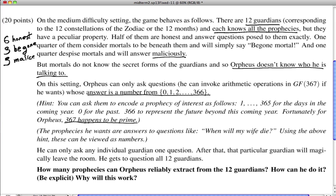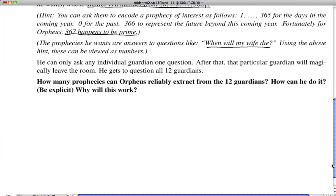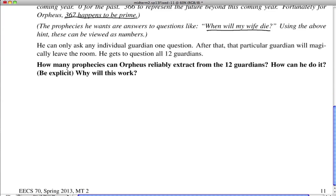So this wasn't in the midterm, but in the homework, we added this extra line here that says the prophecy wants our answers to questions like, when will my wife die? So this says you can turn these into a number. So now the restrictions in the problem become a little clearer. You can only ask any individual guardian one question. After that, you'll magically disappear. And he gets to ask 12 questions to 12 different guardians. And now here's the actual problem. How many prophecies can Orpheus reliably extract? Then you have to answer, how can you do it? And why will this work?